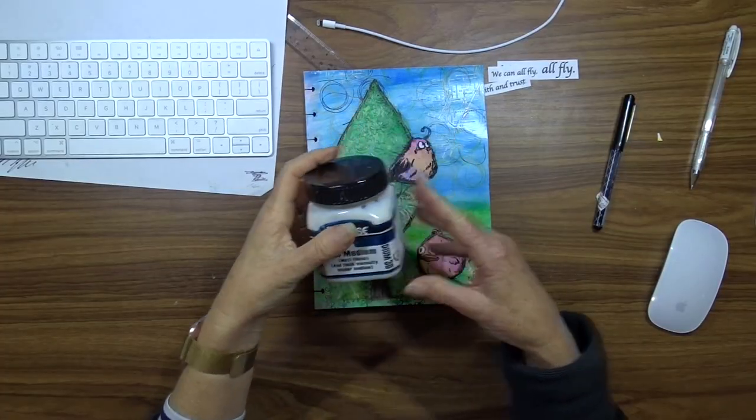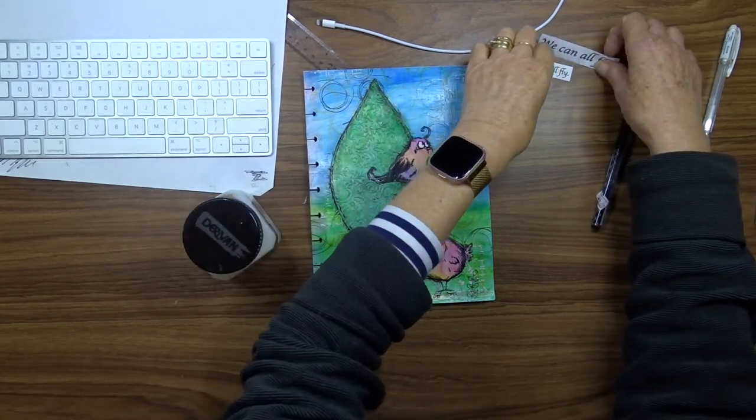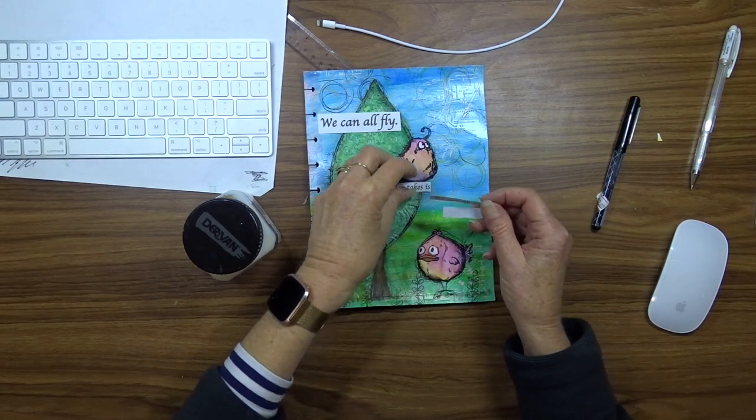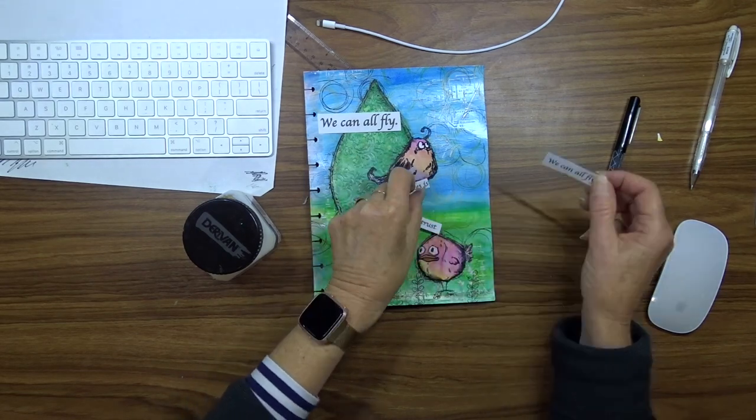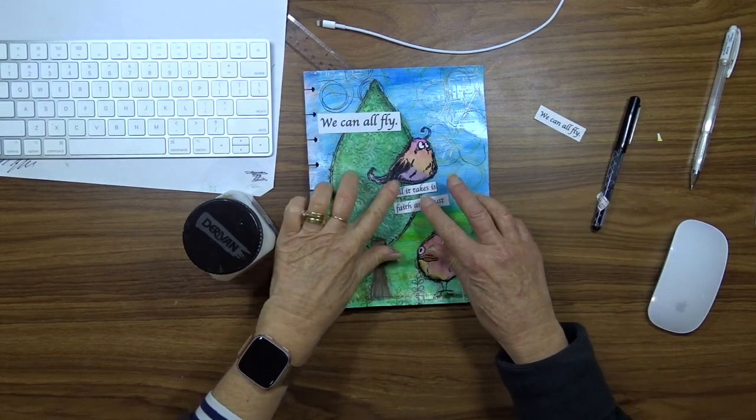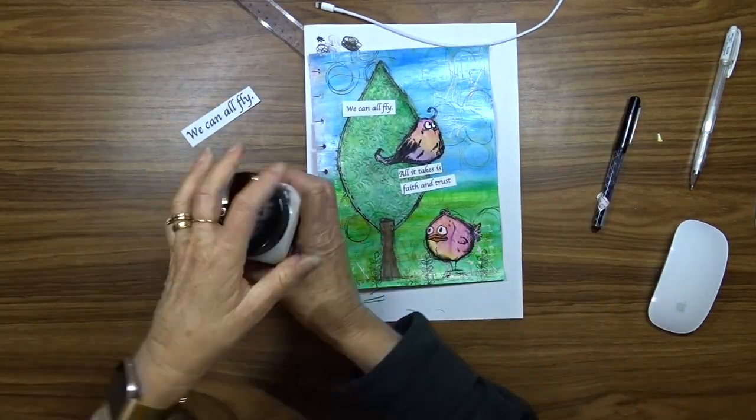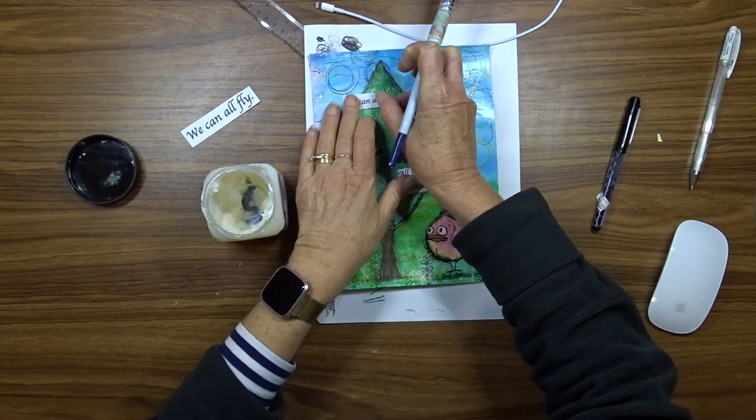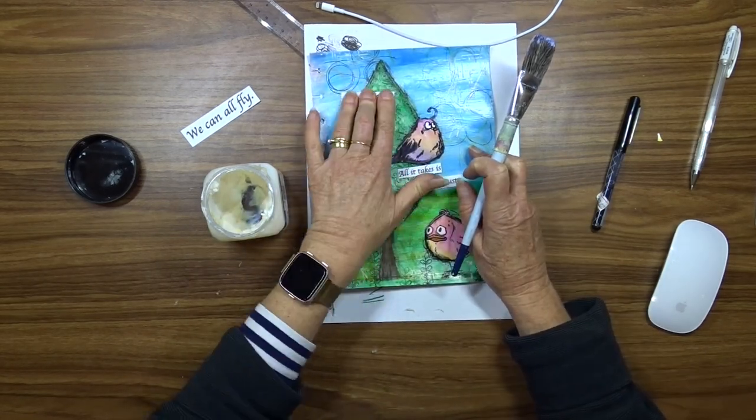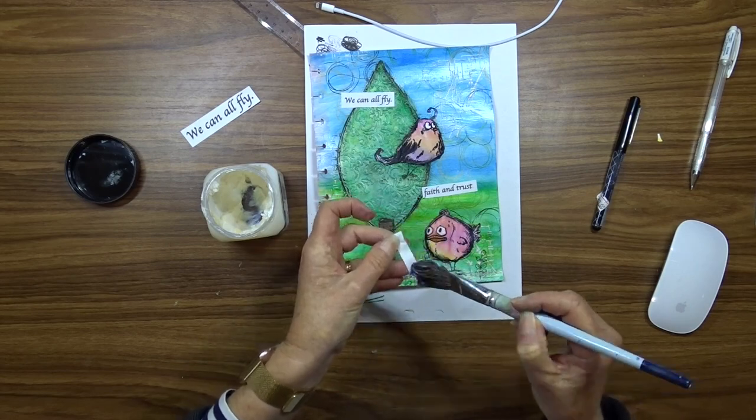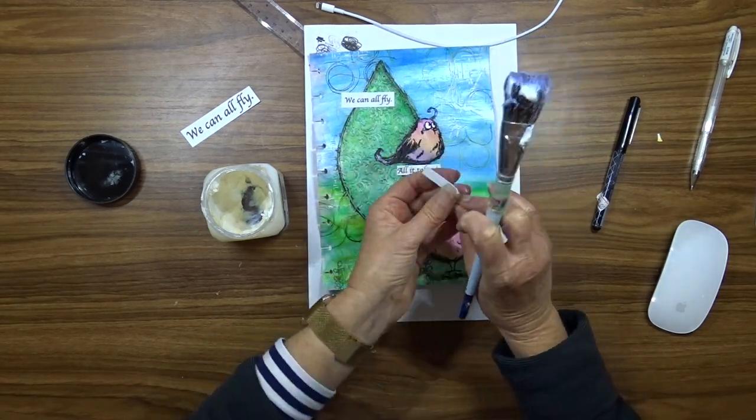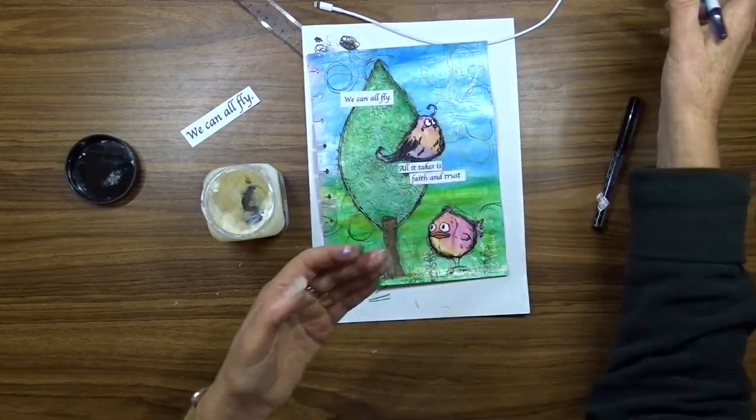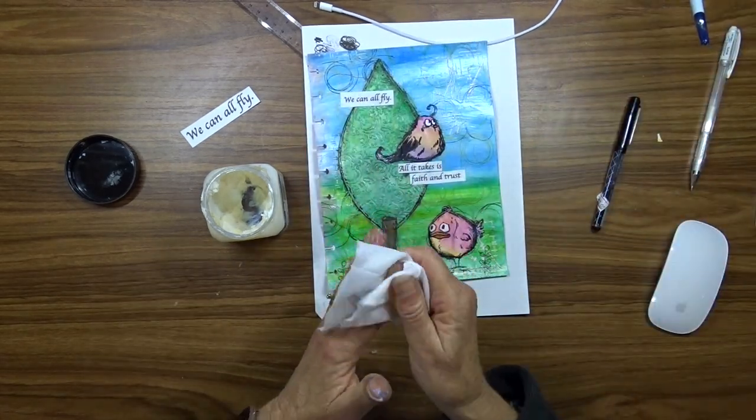My title says 'We can all fly, all it takes is faith and trust.' I found this quote on the internet, well actually it wasn't the same as that, I adjusted it a little bit. And I printed it out on my computer just on normal copy paper and trimmed it down to fit onto my page. I printed the first part 'We can all fly' larger and at the same size as the other part and decided to go with the smaller print.